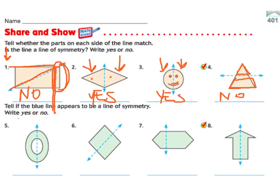Okay, number five, tell if the blue line appears to be a line of symmetry. Write yes or no. This side and this side are exactly the same, just mirror images. So, yes, this has line symmetry.